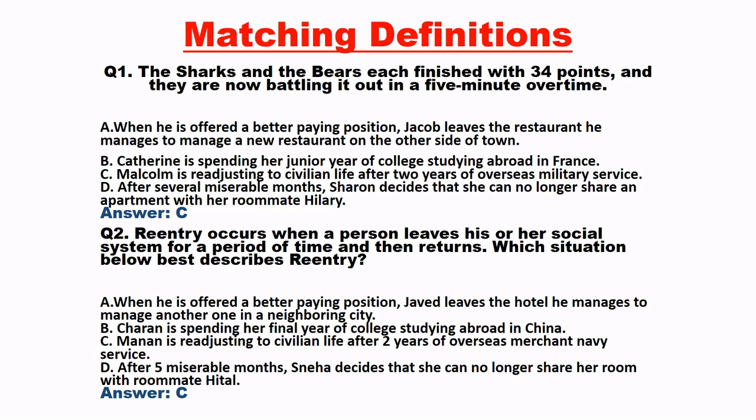Now look at question number 2. Reentry occurs when a person leaves his or her social system for a period of time and then returns. Which situation below best describes reentry? Ab reentry joh word hai, iska matlab kya hota hai: aisa insaan joh ki apni social cheezein sab chhodd kar chala jata hai, aur phir se vaapas a jata hai. So yahaan par option number C mein diya hua hai: Manan is re-adjusting to civilian life after two years of overseas merchant navy services. Yahaan per bhi Manan joh hai, woh two years merchant navy mein kaam karne ke baad phir se vaapas aaya hua hai aur ab re-adjustment kar raha hai. Is tariqe ke questions ko kaha jata hai matching definition type of questions.